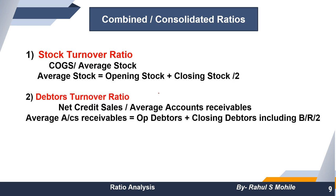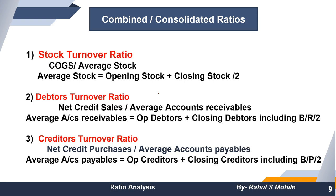Creditors turnover ratio is similar to debtors turnover ratio with small changes: here we use net credit purchases instead of net credit sales, and average accounts payables instead of average accounts receivables. Opening debtors plus closing debtors (plus bills receivables) divided by 2 gives average accounts receivables; similarly for payables. The formulas are structurally similar.